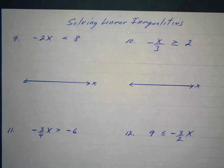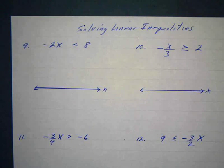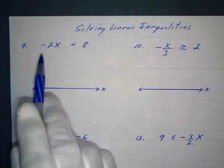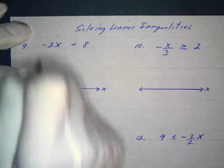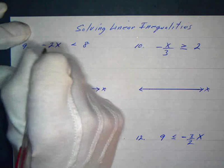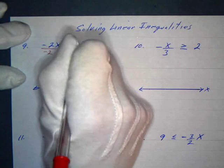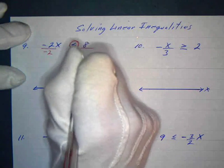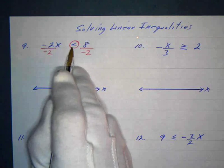Here's an example: negative 2x is less than 8. I want to solve for x, so I have to get rid of the negative 2. I'll divide both sides by negative 2, just like we would with an equation, except I know I'm going to have to change the direction of the inequality. I use a little method where I circle the inequality sign.